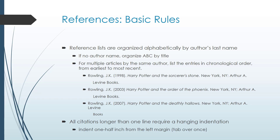If you have multiple articles by the same author, you list them in chronological order. So if you were writing a paper on Harry Potter, you would organize those multiple Harry Potter books by date — earliest comes first, then the list goes down to the most recent. For APA, the date always comes right after the author, so you go author then organize in chronological order.